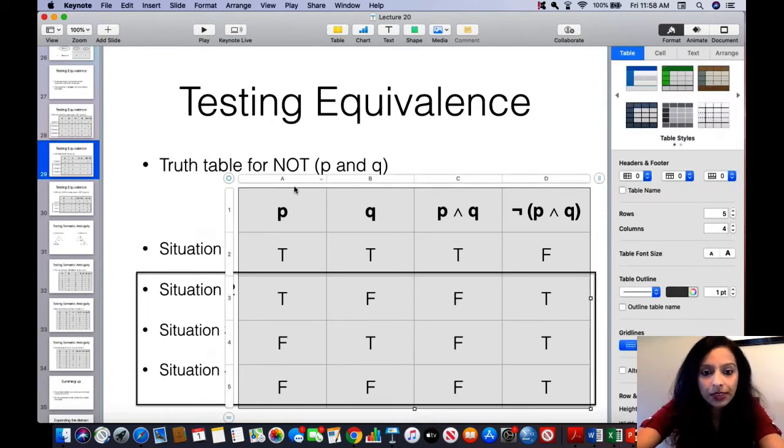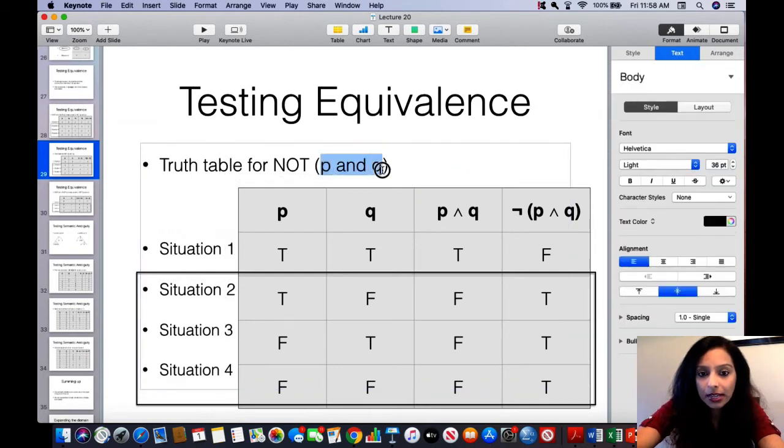So, you start again with P and Q, and put them together: true-true, true-false, false, and then you put the formula inside the parentheses, which is P and Q. So, this is just a regular truth table for P and Q.